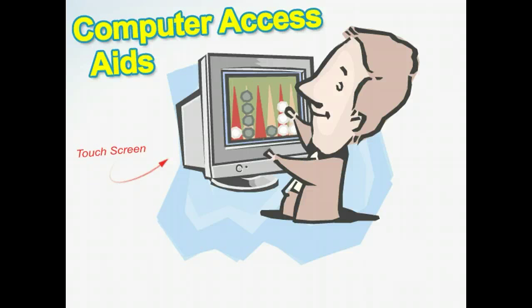Computer access aids, which help disabled individuals access and use computers, make up a third category. These products include modified keyboards, touch screens, various pointing devices, screen magnifiers, and speech recognition software. They can help students with physical disabilities participate with and feel more a part of the class.